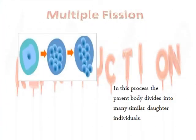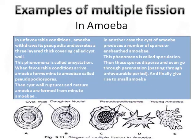Multiple fission means producing many small individuals. In amoeba, multiple fission takes place by two methods: first, in which pseudopodiospores are formed, and second, in which spores are formed. Both structures give rise to small amoebae.